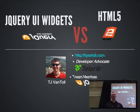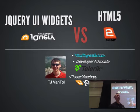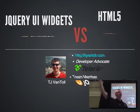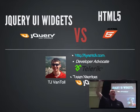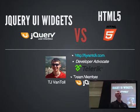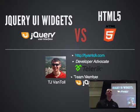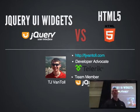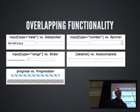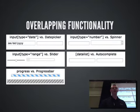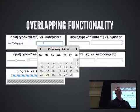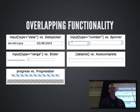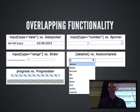I want to start by asking everybody a question. How many people in this room have a jQuery UI widget deployed in a production application? How many people are using one of the new HTML5 input types in a production application? Just a handful of people. And this is really what this talk is about — native controls like input type date versus JavaScript widgets like jQuery UI's date picker, input type number versus spinner, range controls, and data lists.